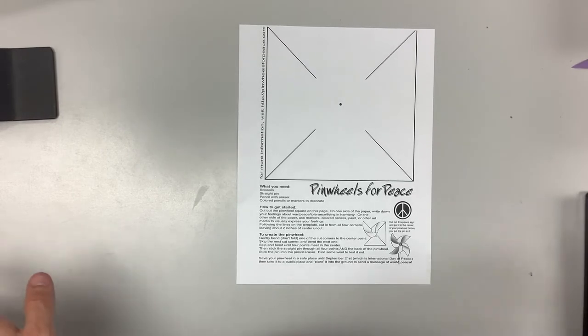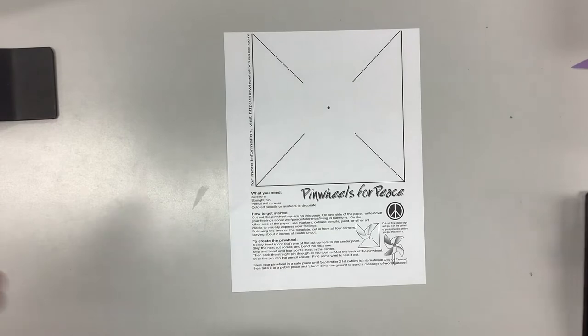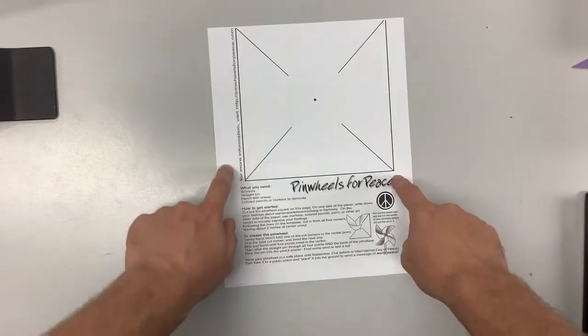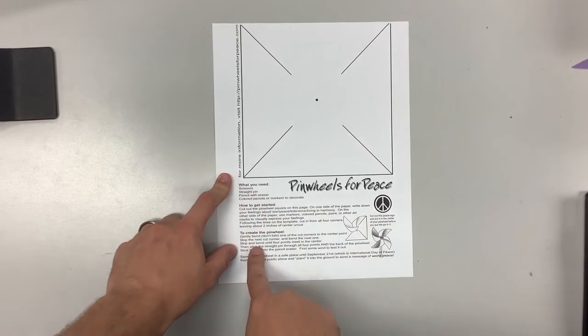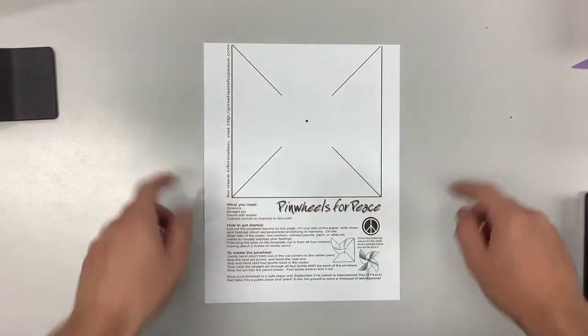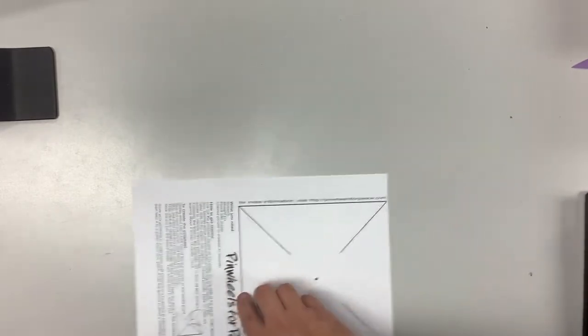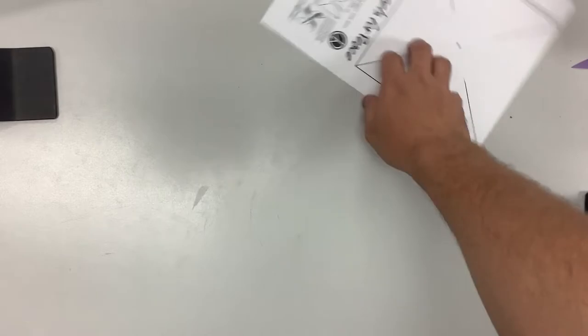The easy way is if you have a printer. You may go to the Pinwheels for Peace website and they have a template where you can download and print this template, all your instructions, what you need, and then you can decorate from this page and cut it out. But let's say you don't have a printer. I don't have a printer at home, so what am I going to do?